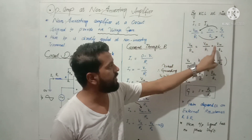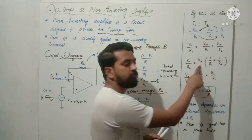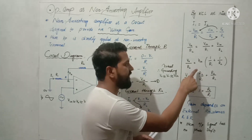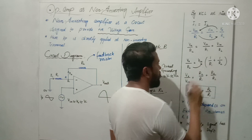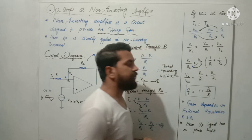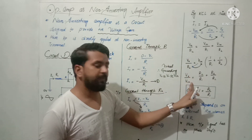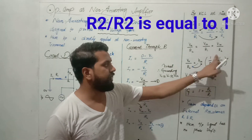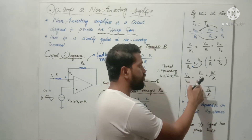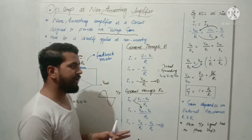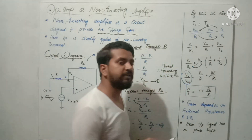Now if we already have the expressions combined, we can see that with V-in as a common factor, multiplying through by R2 and R1 gives us the gain expression. Here we have the gain of the amplifier. The expression V-out by V-in is what we call the gain of the amplifier.